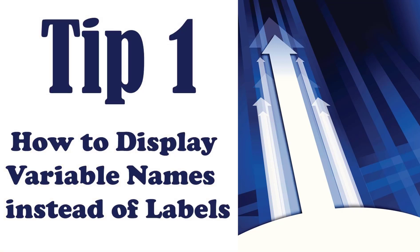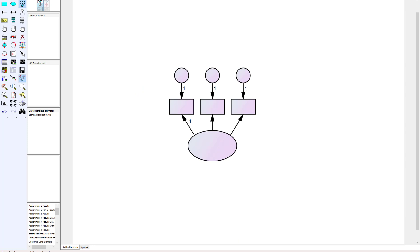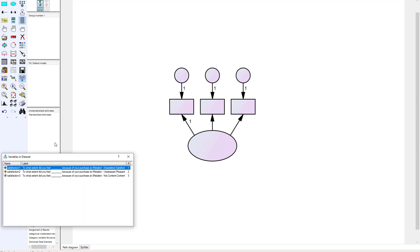Tip one: how to display variable names instead of labels. One of the frustrating things when I first started using AMOS was that the default is to display variable labels when you drag and drop into the AMOS working area. You can see this can be somewhat problematic when trying to figure out how to save space, because with very large models you really need to save as much space as you possibly can. Here I've got a simple unobservable with three observable indicators and error terms.